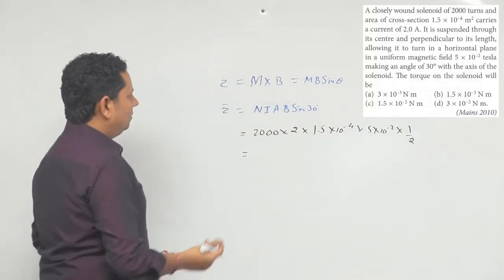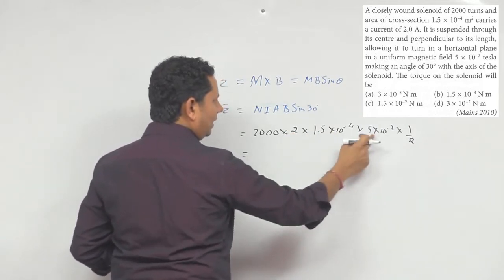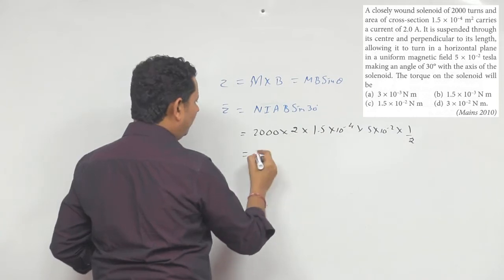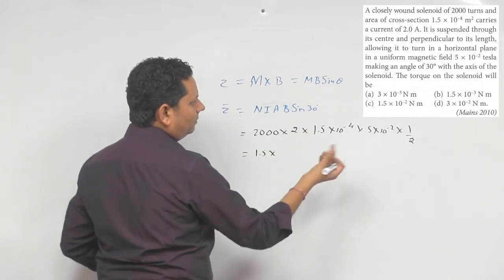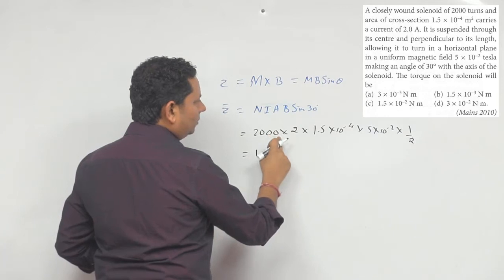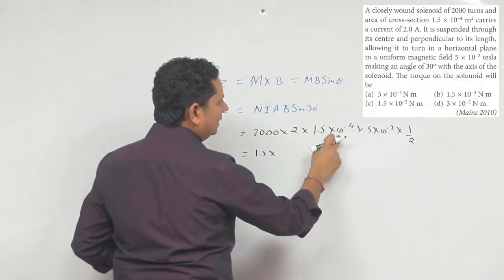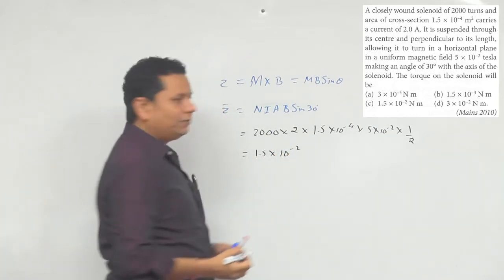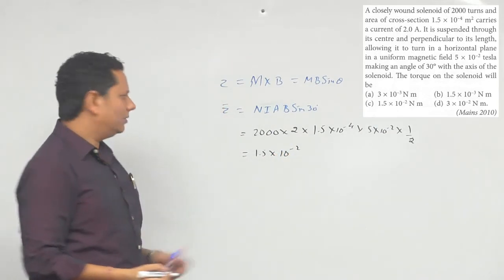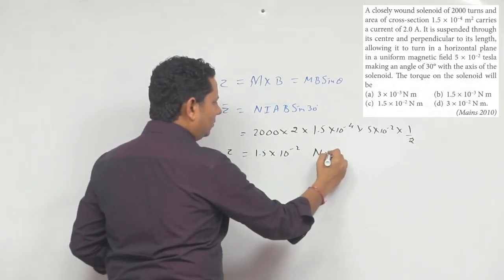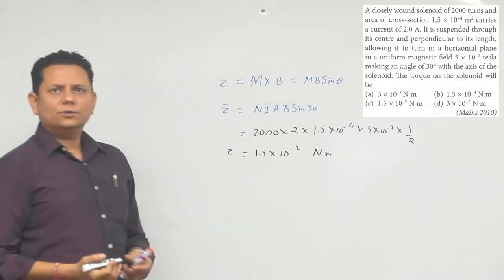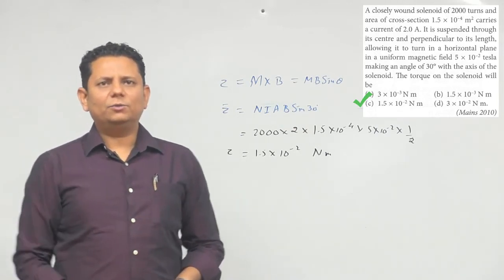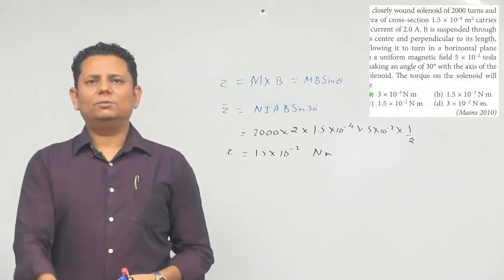Solving this: the 2 from current and 2 from the denominator of sin 30° cancel, giving 5×10=10, and 1.5 remains. Checking the powers of 10: combining exponents gives 10⁻⁴ × 10⁻² × 10⁰ = 10⁻⁶, and after accounting for the remaining factors we get 1.5×10⁻² newton meter. So the torque is 1.5×10⁻² N·m, and option C is the right answer.